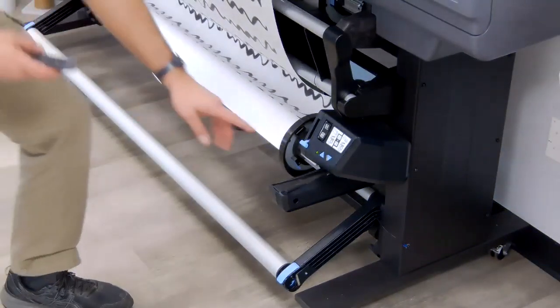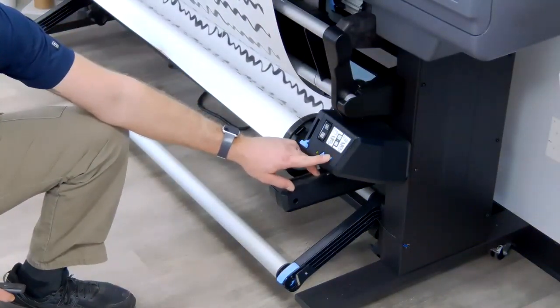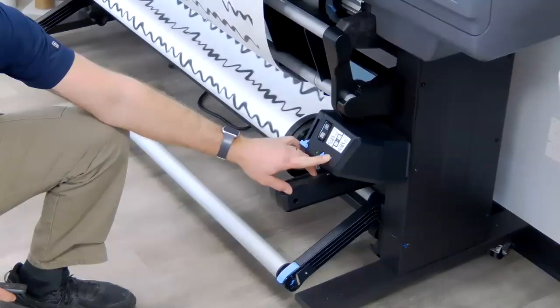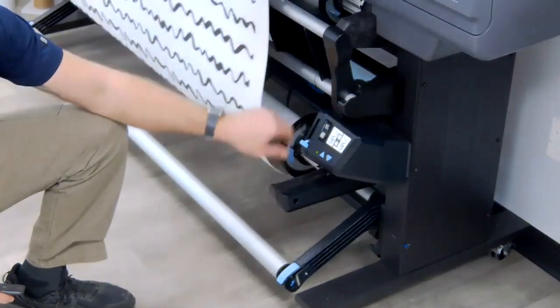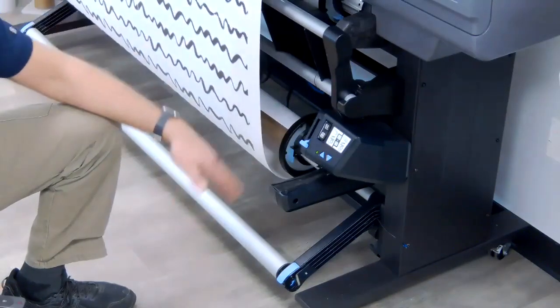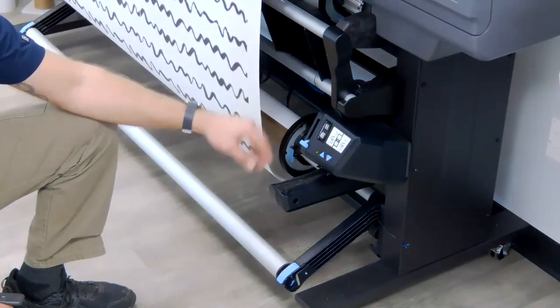And now I'm gonna take this system here and engage the roll manually. Just enough to where that material is a little bit more than or almost a full rotation around my core.